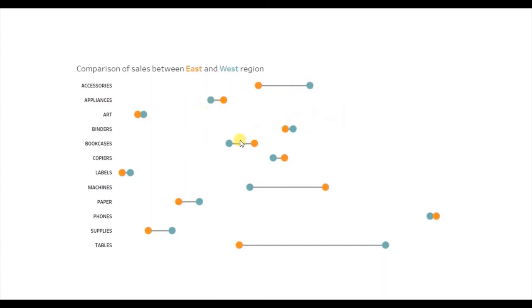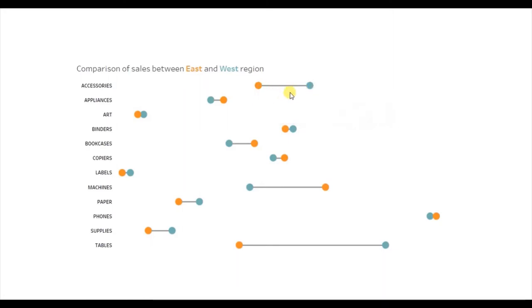The name of this chart type is dumbbell or barbell chart because it looks like a dumbbell used in the gym. The two circles represent the weights and the connecting line represents the rod holding both the weights. This chart type lets you easily visualize the comparison between the two regions.